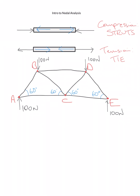For nodal analysis, we look at one node at a time starting with where we have the most information. First we need to assume our struts and our ties. Looking at member AB, the external forces are pushing in on that beam, so we assume compression — therefore the internal forces for AB must be going towards the node. For AC, the external force isn't squashing or stretching it, but there's a force pushing left, so it's probably in tension — the internal forces pull in.